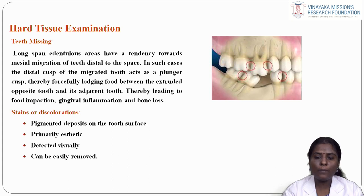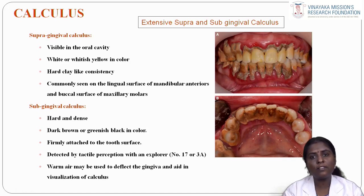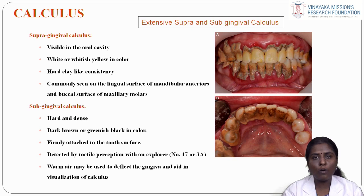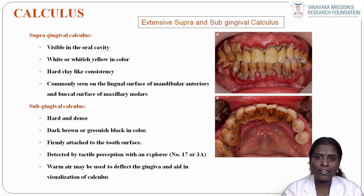Stains or discolorations are pigmented deposits on the tooth surface, primarily of aesthetic concern, detectable visually and easily removed. Calculus: supragingival calculus is visible in the oral cavity, white or whitish, with a hard clay-like consistency. It is commonly seen on the lingual surfaces of mandibular anteriors and buccal surfaces of maxillary molars. Subgingival calculus is hard and dense, dark brown or greenish-black, firmly attached to the tooth surface, and detected by tactile perception using an explorer (number 17 or 3A). Warm air may be used to deflect the gingiva and aid visualization.